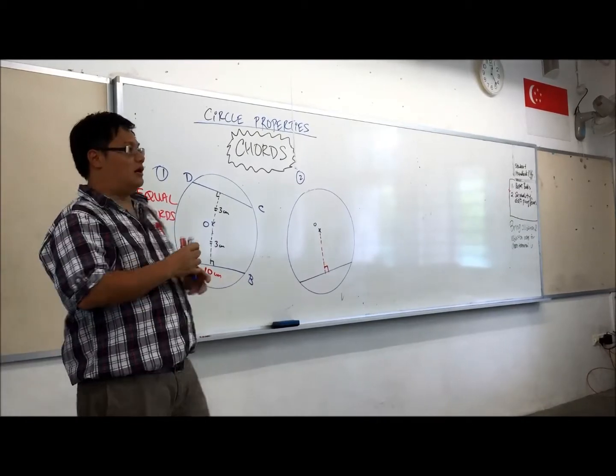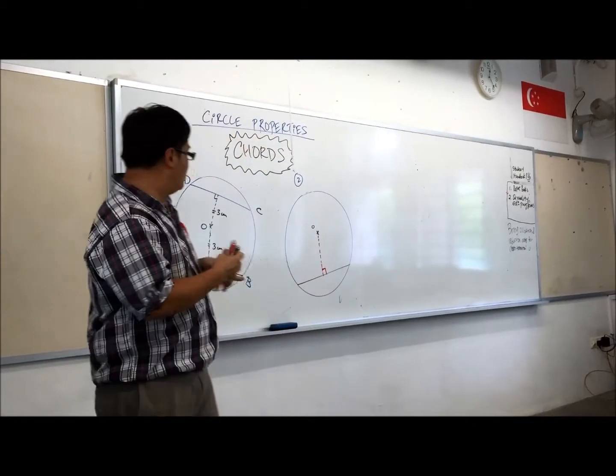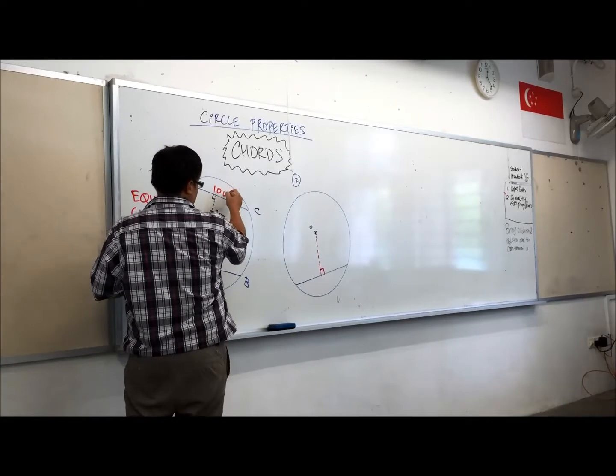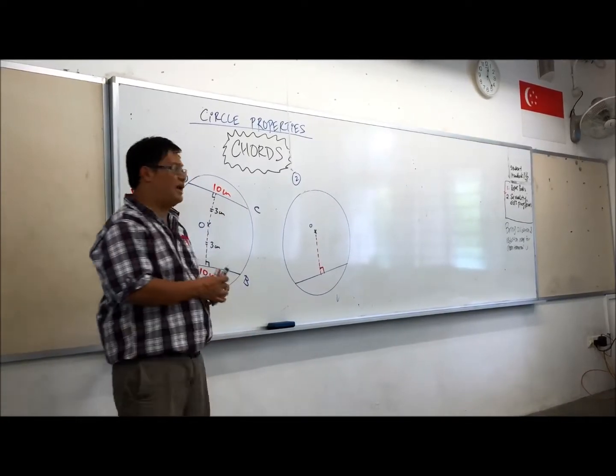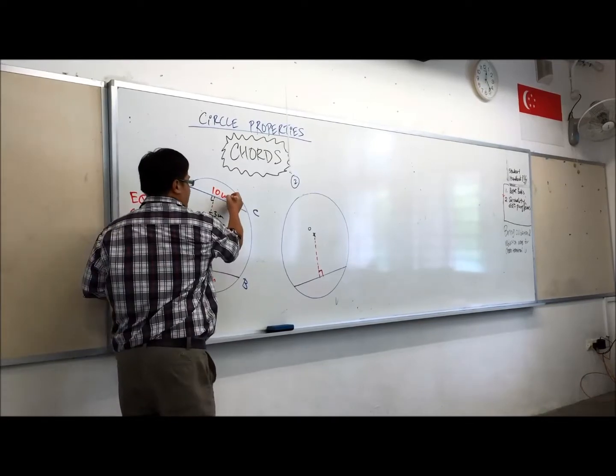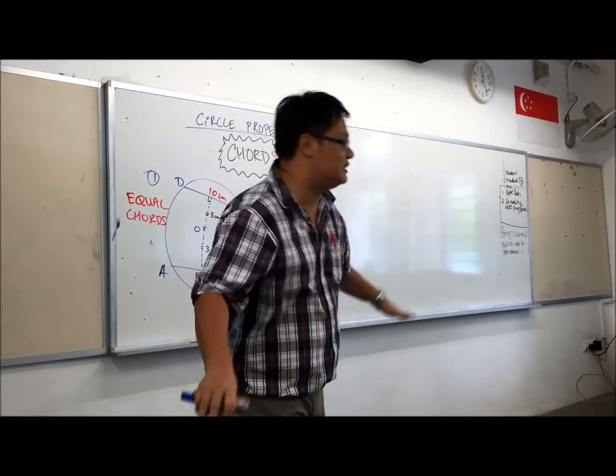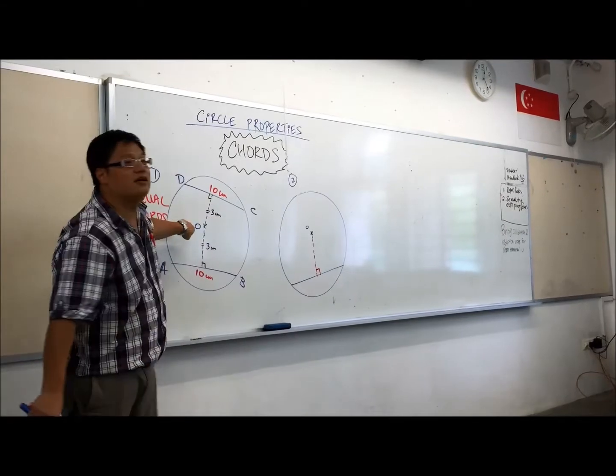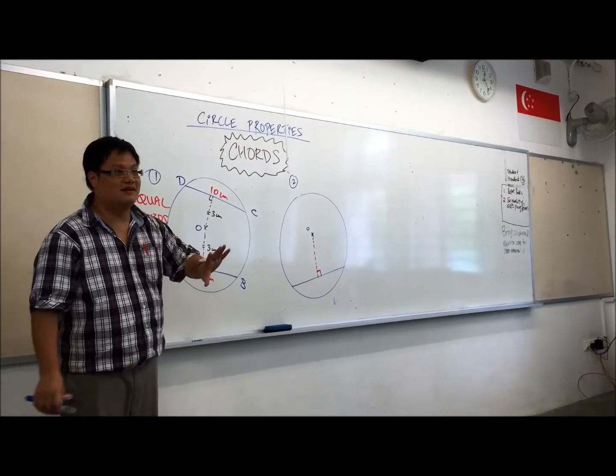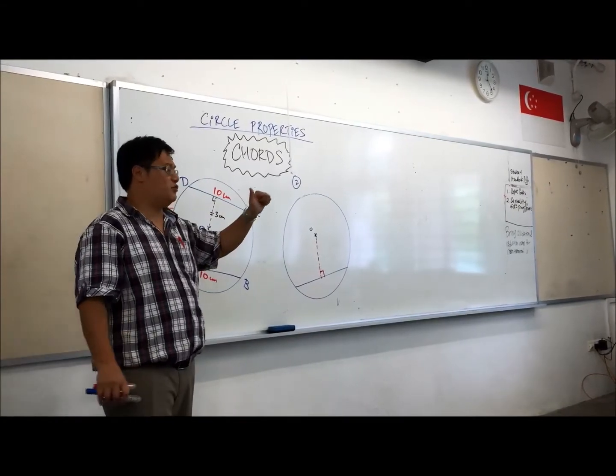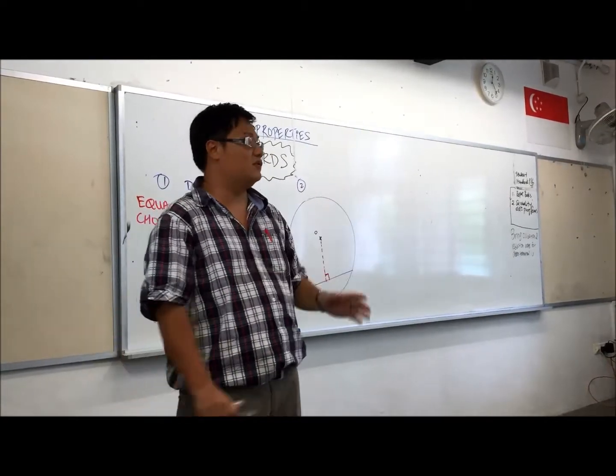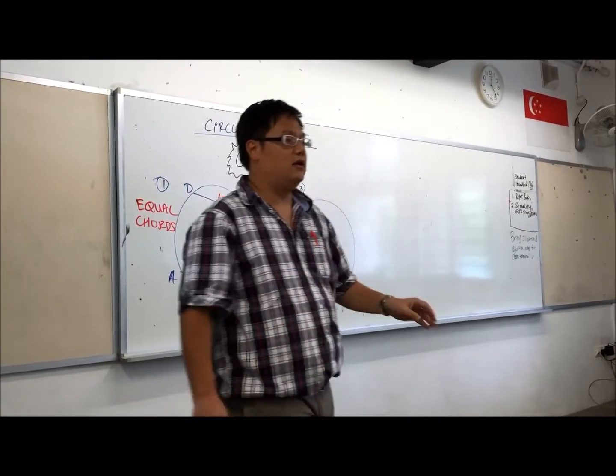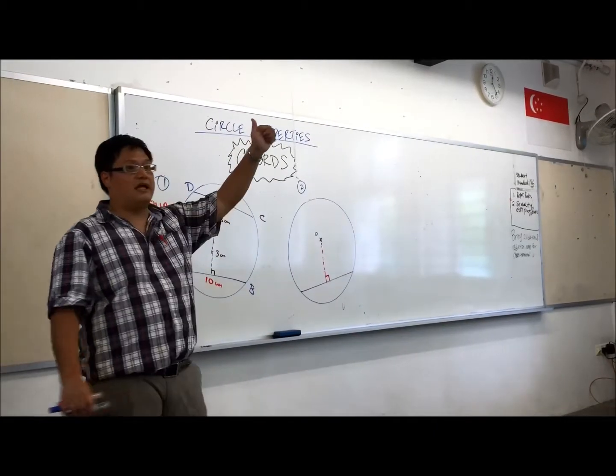Likewise, if two chords are of the same length, if AB is 10 cm, CD is also 10 cm long, then they must be of equal distance from the center hole of the circle. That's the first property we have to remember. If two chords are equally distant from the center hole, equally distant comes with equal distance, then they must be the same length. Are we cool with that?